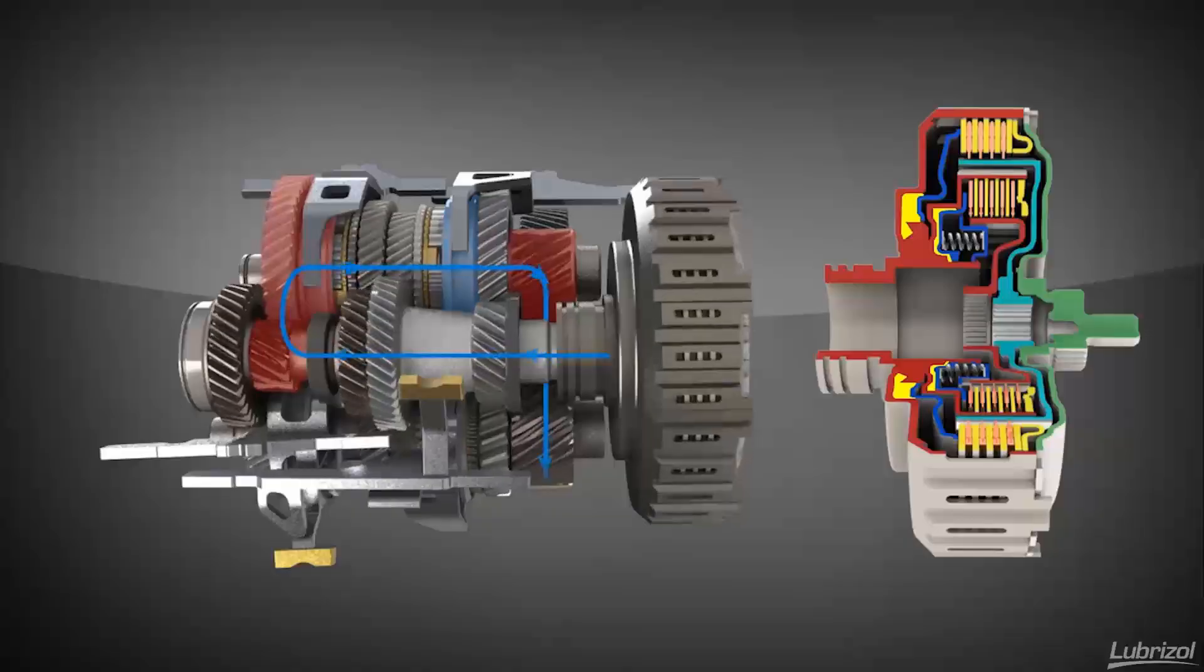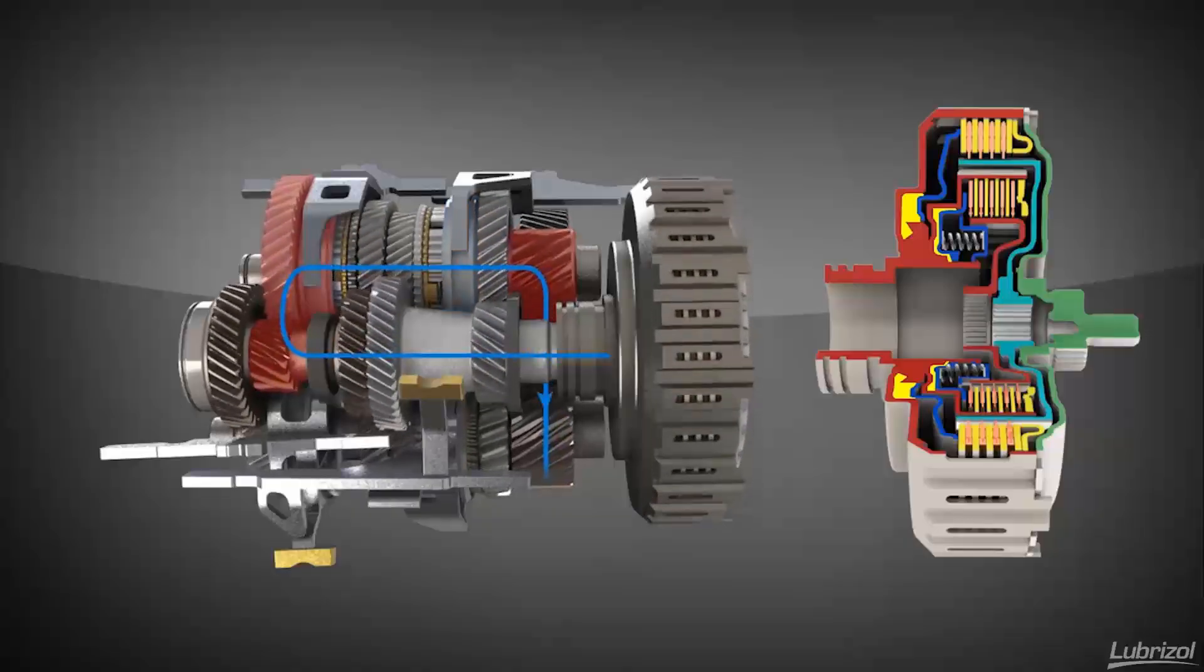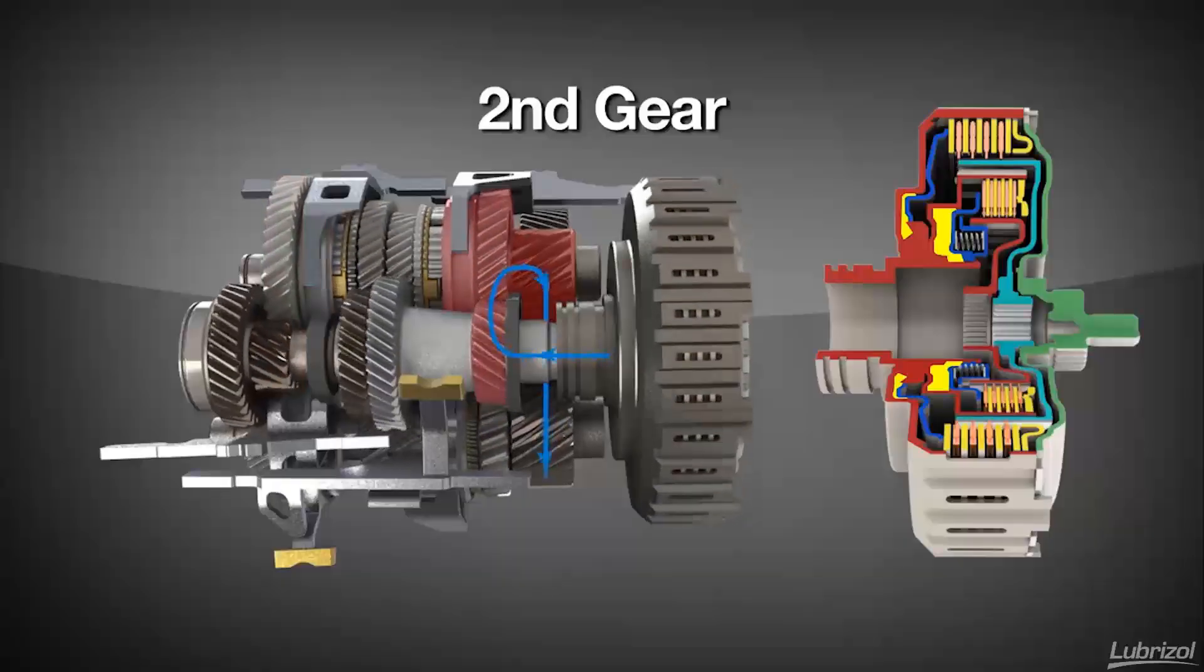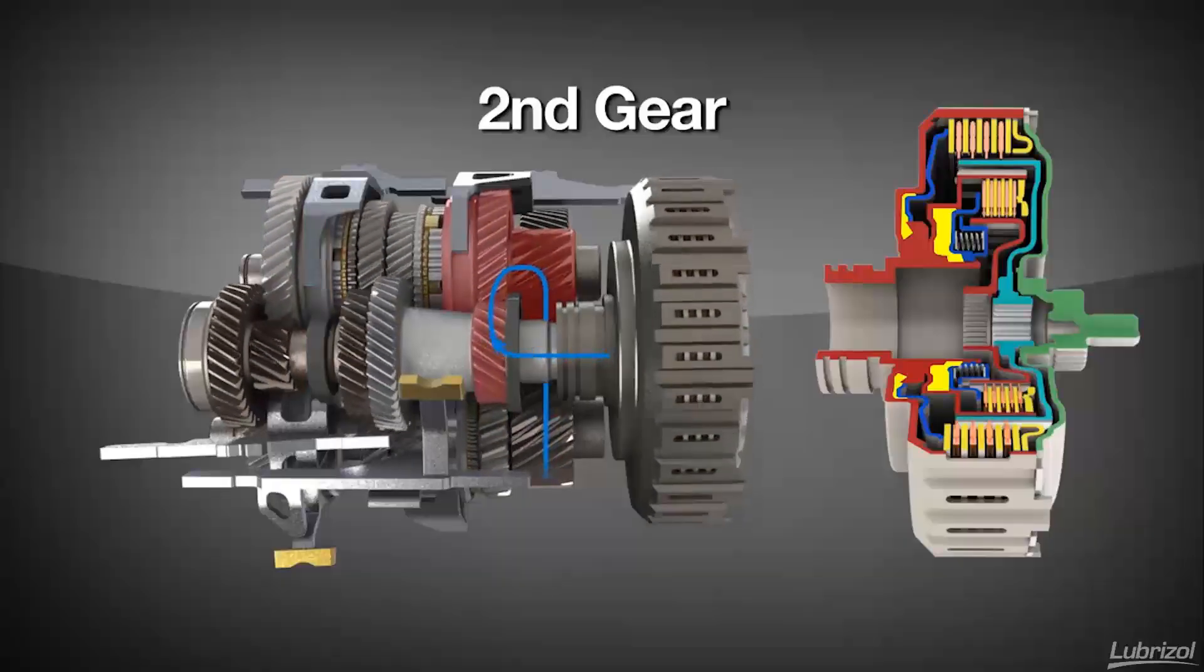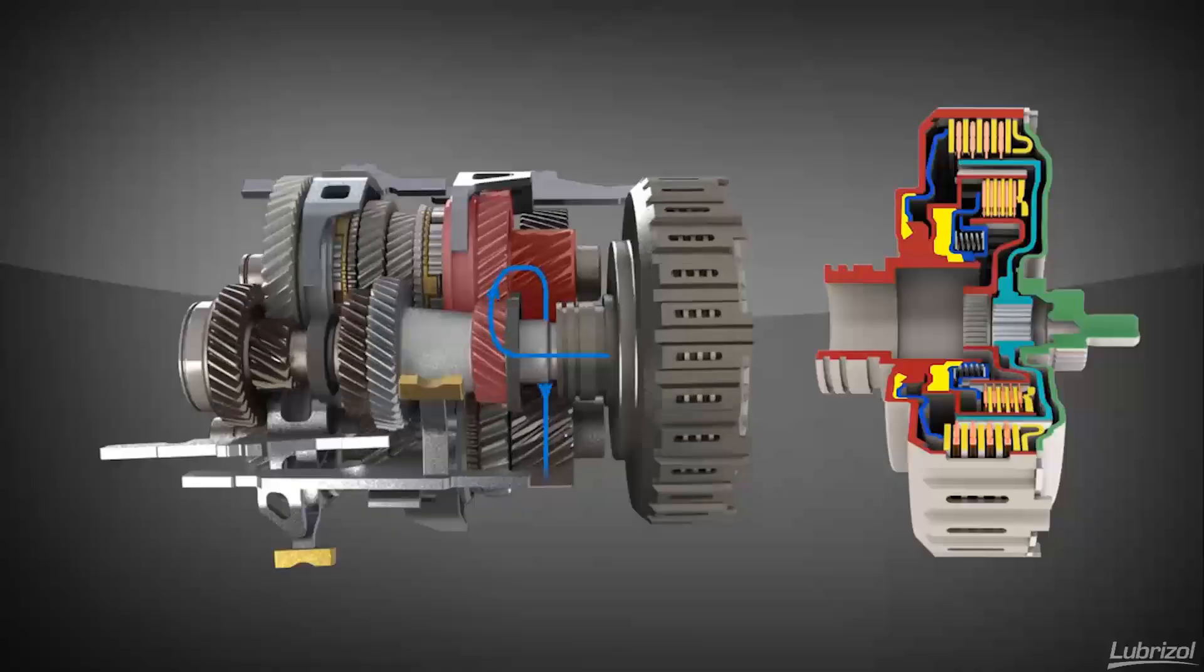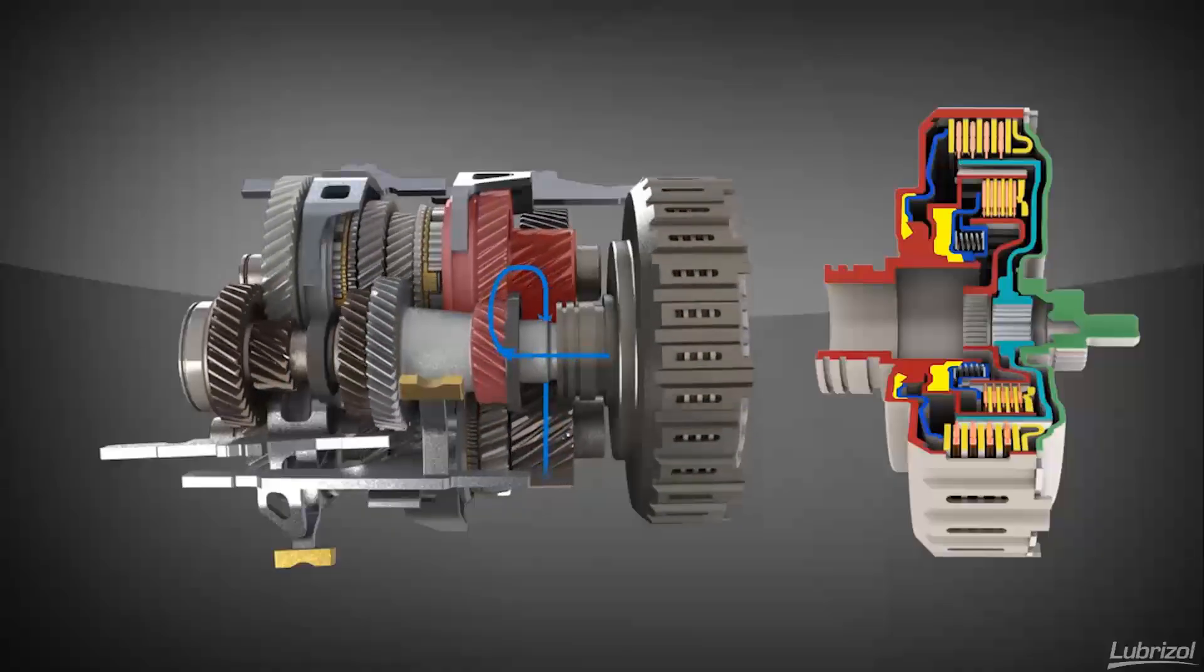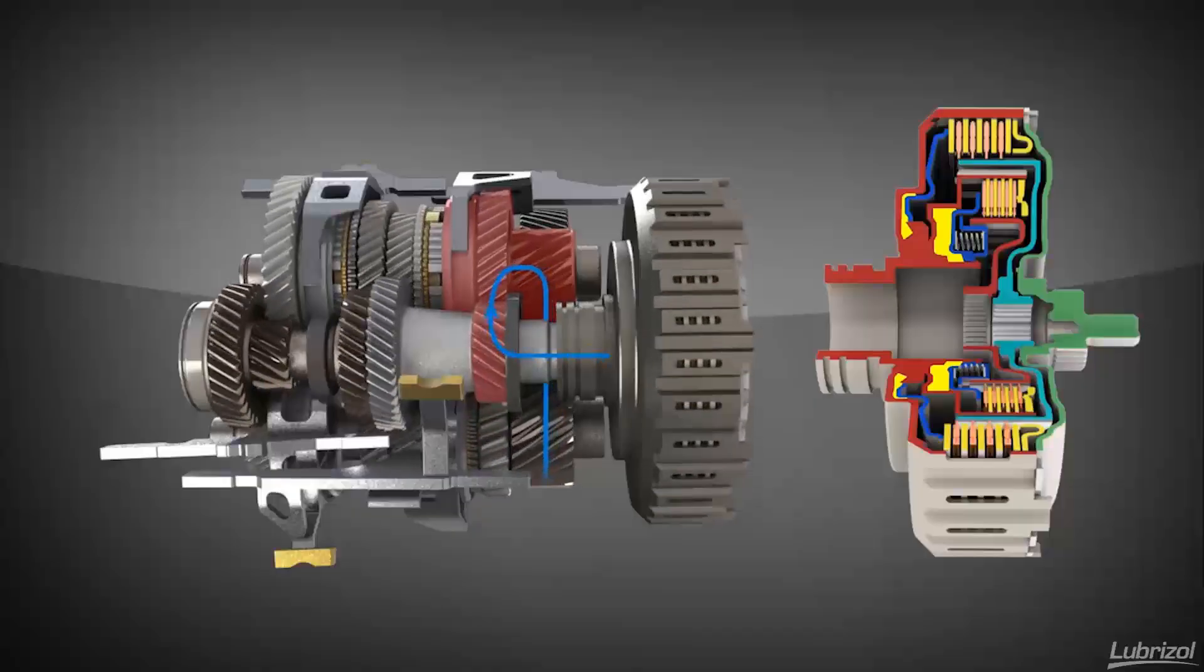When it's time for the vehicle to shift into second gear, the outer clutch will disengage and the inner will engage, thus directing the power through second gear. The exchange of power flow from the outer to inner clutch occurs in a few hundredths of a second, which is quicker than the typical shift time of a step-level automatic.